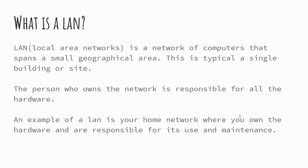A LAN — a local area network. The clue is in the name: local. It's a network that spans over a small geographical area, typically a single building. For example, your home would have a LAN — your home network where all your devices are connected. You might also think about a classroom at school where the 30 or so computers are all connected together to a single point.